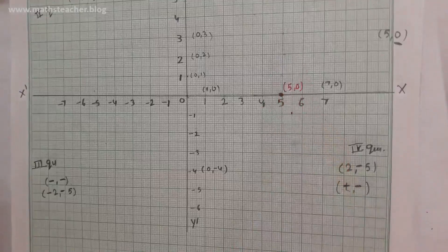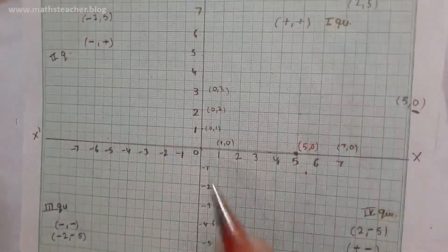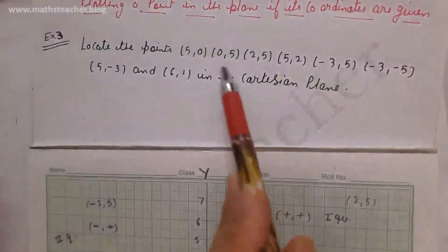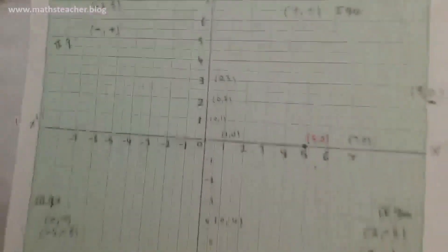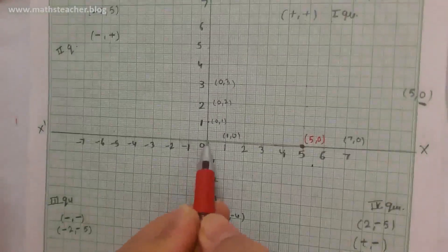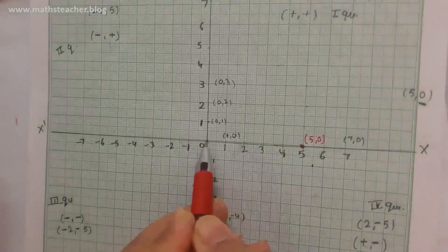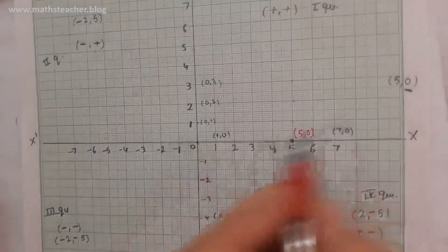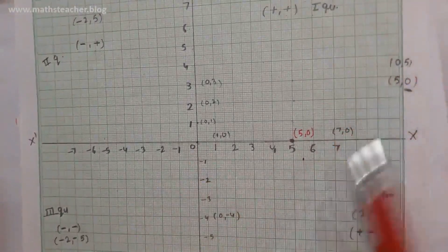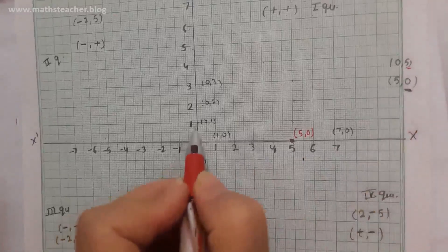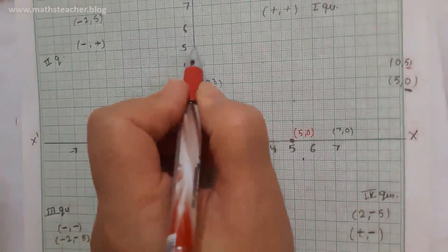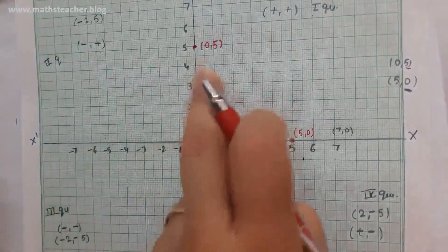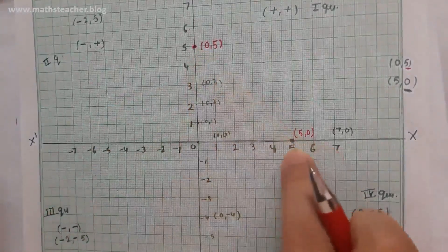Now for the next method with two numbers, let's look at (0, 5). Since x is 0, we do not move horizontally — we stay at 0 on the x-axis. Now we go vertically: 5 steps up — 1, 2, 3, 4, 5. So the point (0, 5) is here. The x-coordinate is 0 and the y-coordinate is 5.